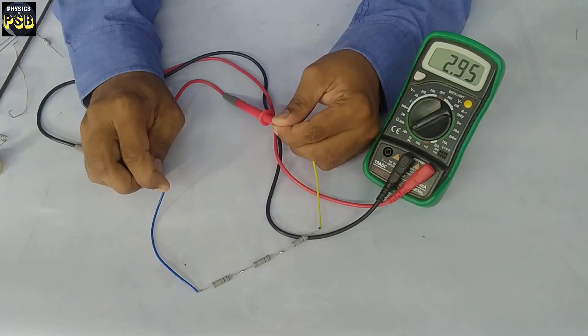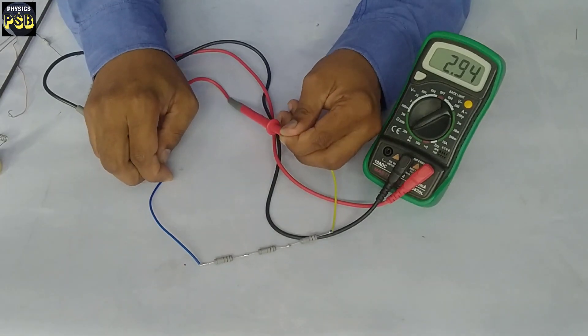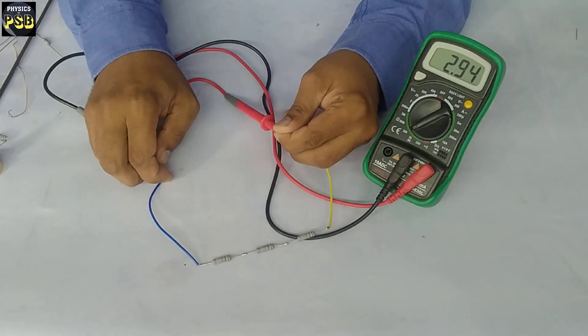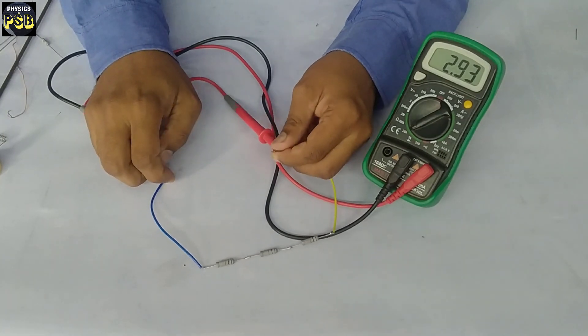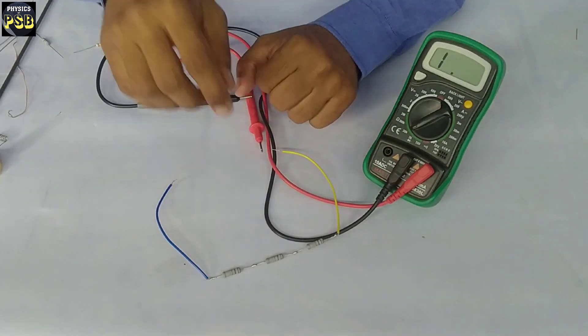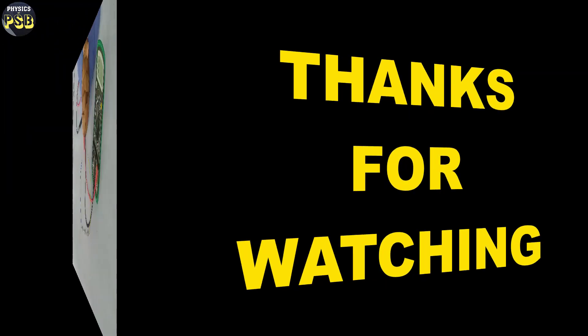See, it is 2.95, which is around 3000 ohm or 3 kilo-ohm. This shows that when resistors are taken in series, their resistance gets added up.